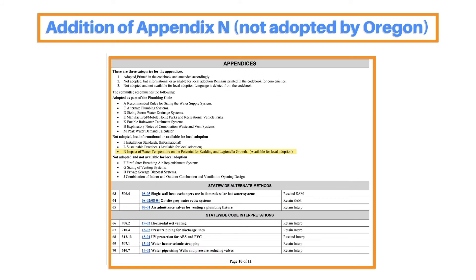In addition to this, Appendix N was created to address the specific impact of water temperature on both scalding and Legionella growth. While this new appendix was not adopted by Oregon, it is available either for informational purposes or for local adoption and contains valuable information plumbers across the nation should be familiar with.